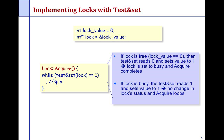If you get a value of zero back, you were able to set a one, so your lock acquire succeeded — you break out of the loop. When the lock is free, the test-and-set completes and sets it to busy, informing other threads that someone has acquired the lock. If the lock is busy, you keep spinning and repeatedly testing until it becomes free.